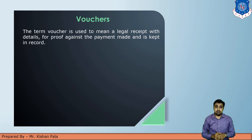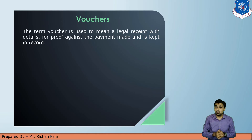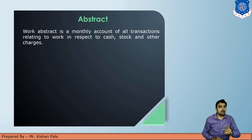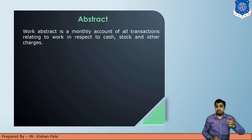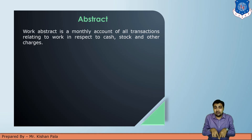Now let us discuss about vouchers. The term 'voucher' is used to mean a legal receipt with details as proof against a payment made, kept as a record. Next is abstract — a work abstract is a monthly account of all transactions related to work, including cash, stock, and other charges. All transaction records can be maintained in the abstract.